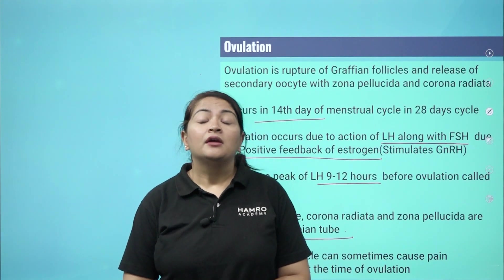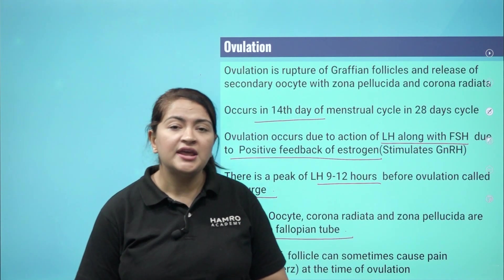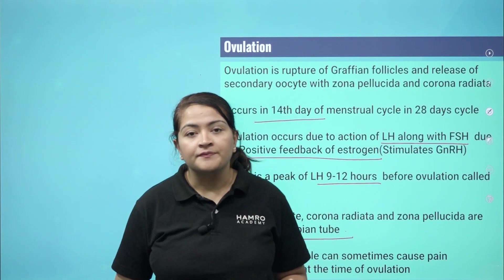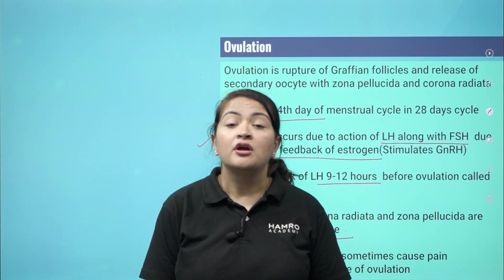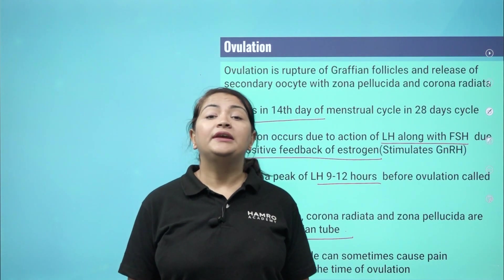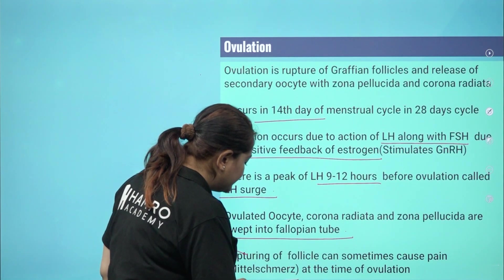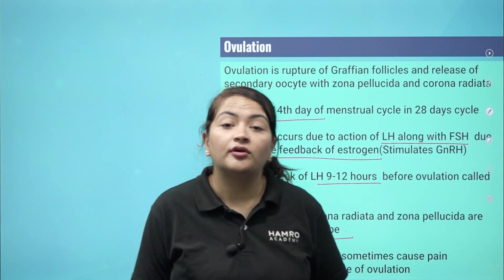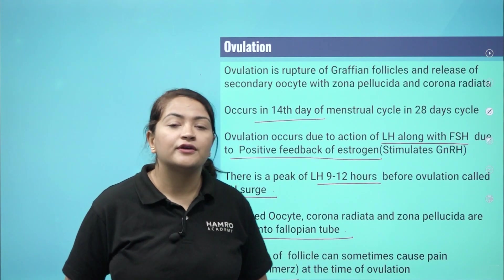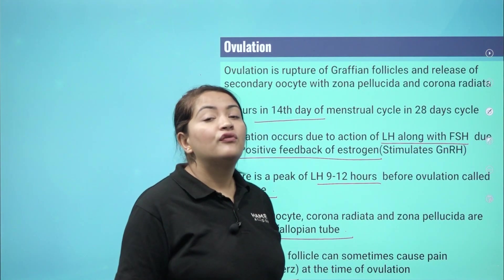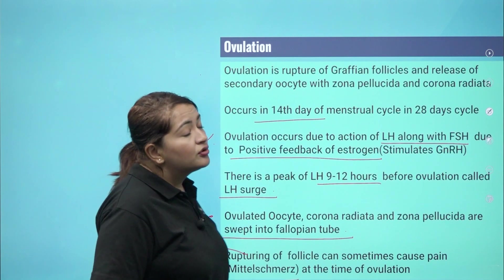On the 14th day of the menstrual cycle, ovulation can cause pain due to the rupture of the follicle. This is not menstrual pain — it is ovulation pain. Sometimes slight bleeding may also occur from the ruptured follicle. This mid-cycle pain is known as Mittelschmerz, a German term meaning 'middle pain.' This is an important and frequently examined topic.